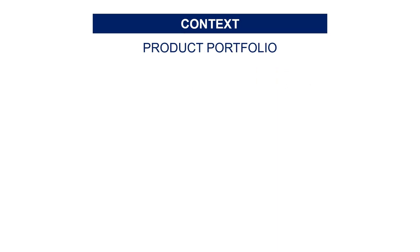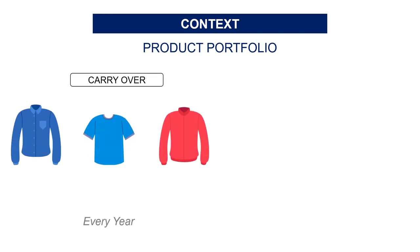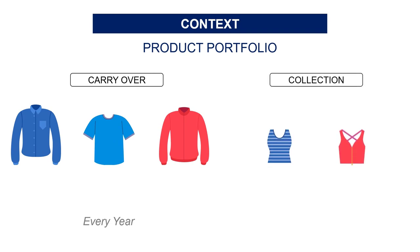In your product portfolio you have two types of SKUs. You have the carryovers — these are the SKUs that are sold every year — and you have the seasonal products that are released every season. You have two seasons per year: spring/summer and fall/winter. A product that starts as a seasonal product can become a carryover later.